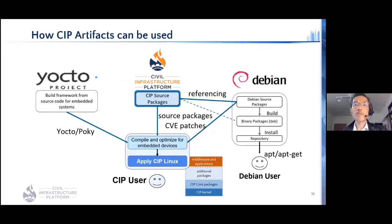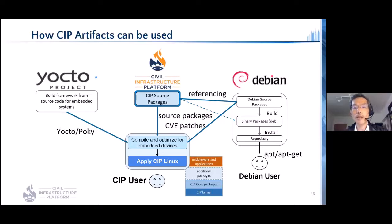CIP artifacts can be used by CIP users through several paths. CIP refers to source or binary packages in Debian. If you'd like to use Debian source packages, you can use Isar as a build system. CIP core packages contain tens of packages, which may not be sufficient for end products, so users can add necessary packages from Debian by writing recipes. Debian provides LTS maintenance and even extended LTS, so super long-term support including user-added packages can take advantage of these maintenance frameworks.